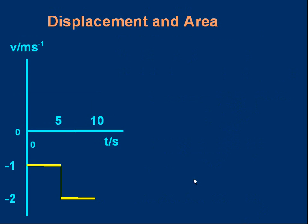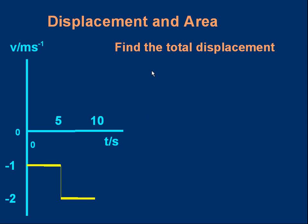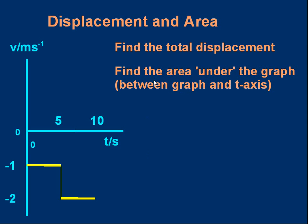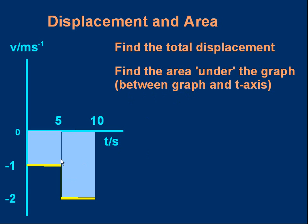Let's do another one. Here's a velocity-time graph. This time the velocity is minus 1 meter per second for five seconds, then it suddenly increases and becomes minus 2 meters per second for another five seconds. Some questions: can you find the total displacement? Can you find the area under the graph? The word 'under' is a bit misleading — what we mean is the area between the graph and the time axis, marked by those blue blocks. So pause the video and try those for yourself.